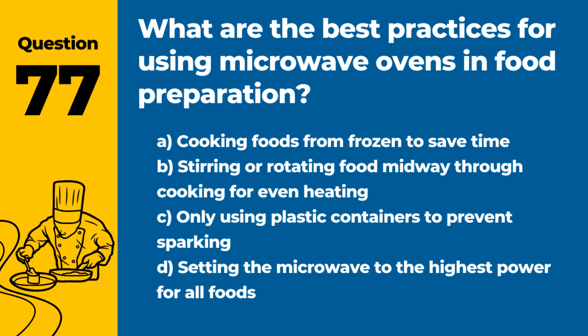Question 77. What are the best practices for using microwave ovens in food preparation? Answer: B. Stirring or rotating food midway through cooking for even heating. This ensures that food is cooked evenly, preventing cold spots where bacteria can survive.